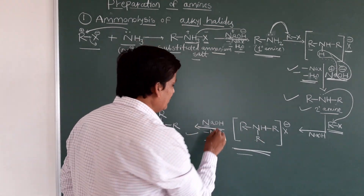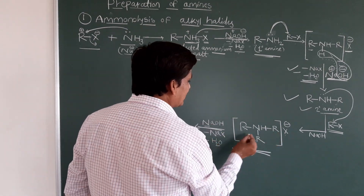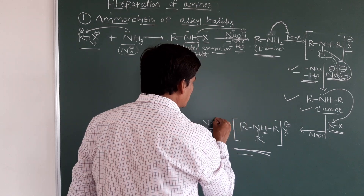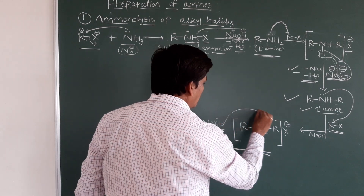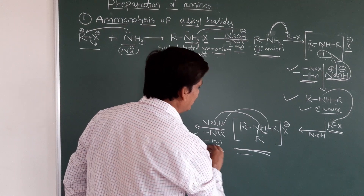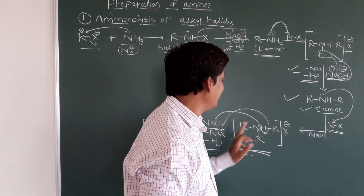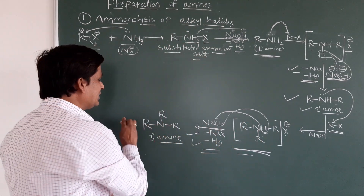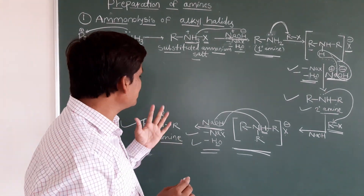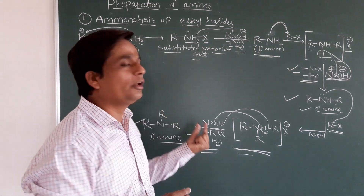After NaX is removed, one hydrogen and the OH group combine to remove H2O. What remains is R–N(R)–R, which is the tertiary amine. So this is how we get the tertiary amine from secondary amine.